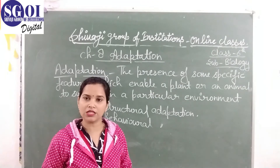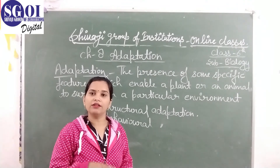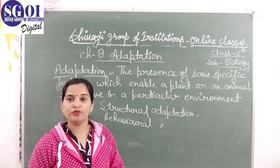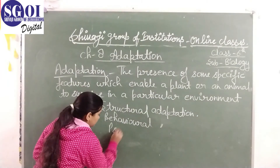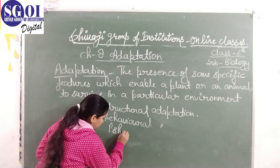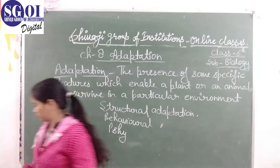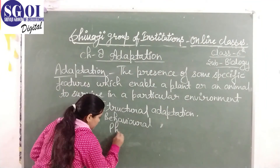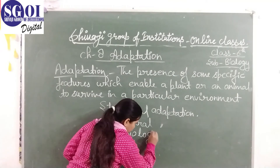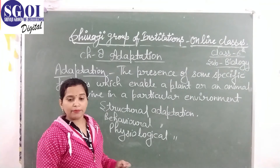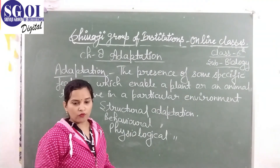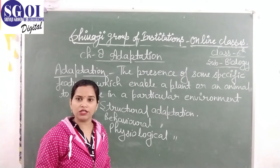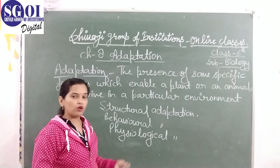In the extremely hot summer season, birds come from desert areas to coastal areas — these are known as migrated birds. That is behavioral adaptation. The next type is physiological adaptation. Physiological adaptation is the functioning of the body in response to the environment.